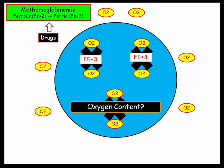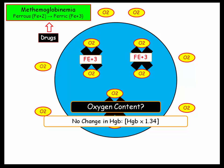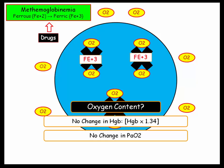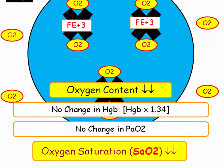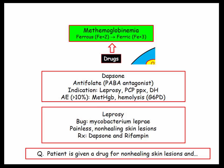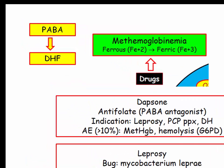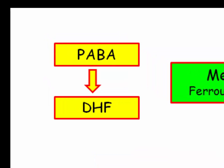How is this concept captured by the NBME? Again, they will frame the question around oxygen content. There is no change in the amount of hemoglobin — the red cells are still present. There is no change in PaO2 as the amount of dissolved oxygen hasn't changed. It is a reduction in the oxygen saturation that leads to a reduction in the oxygen content. Drugs most commonly cause this condition. Chief among those drugs is dapsone, which is an antifolate agent.